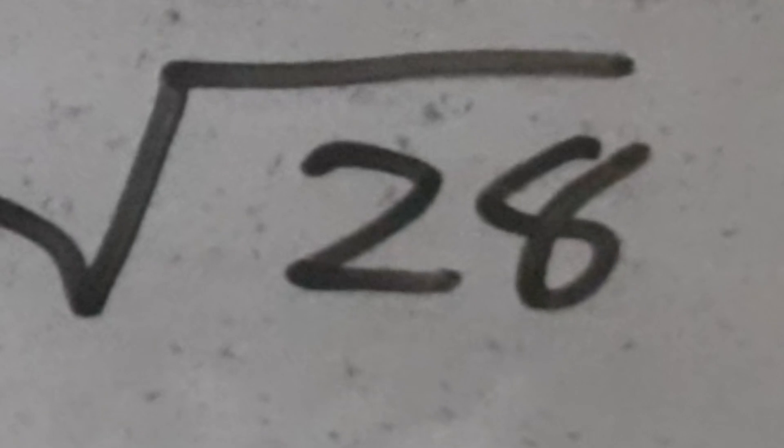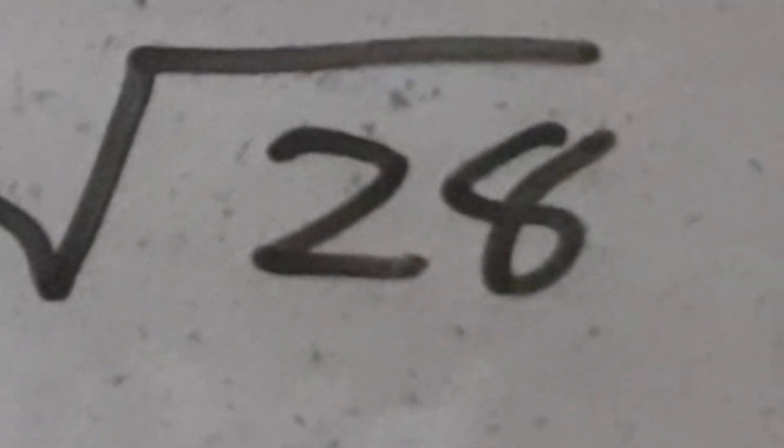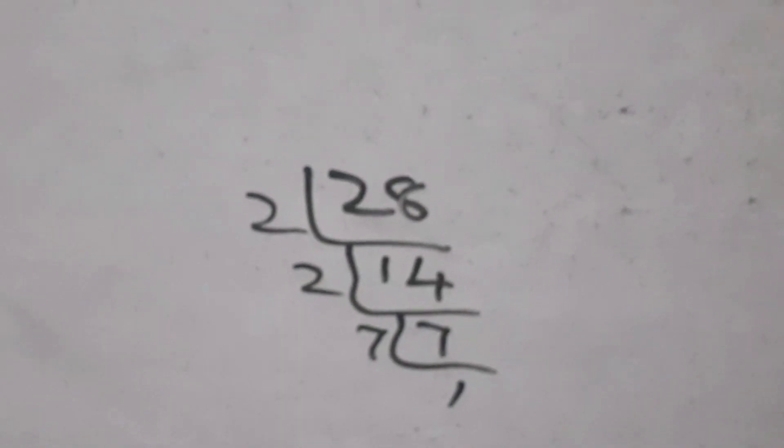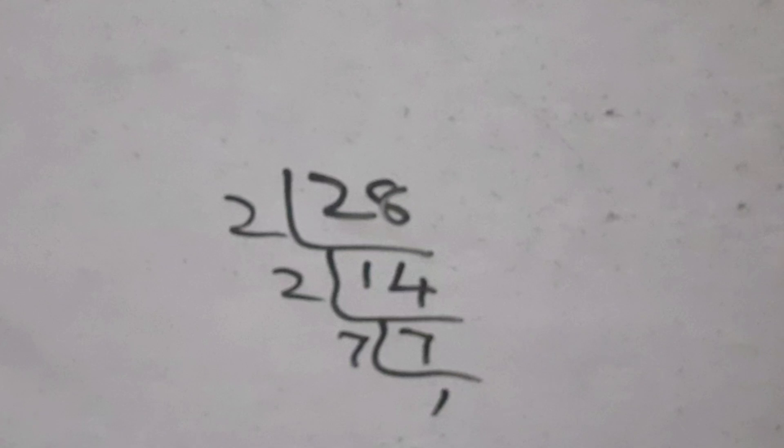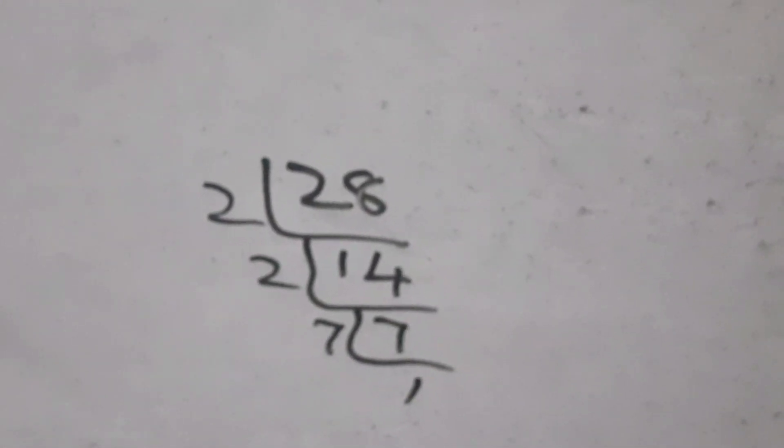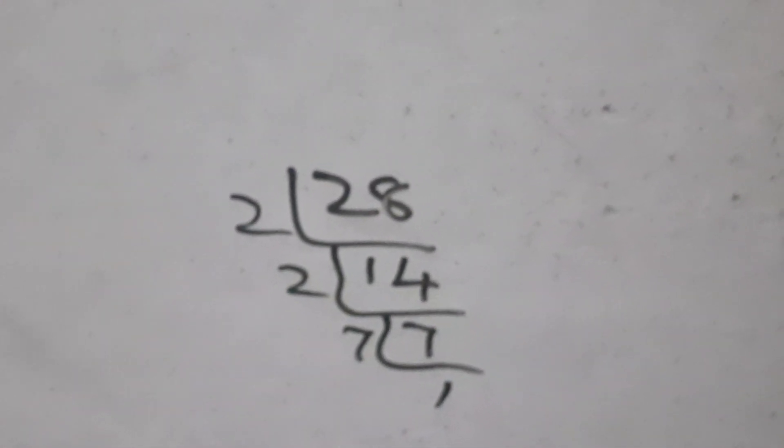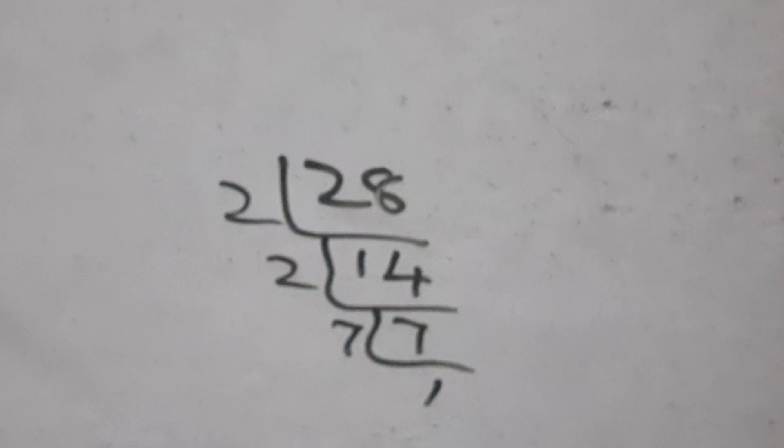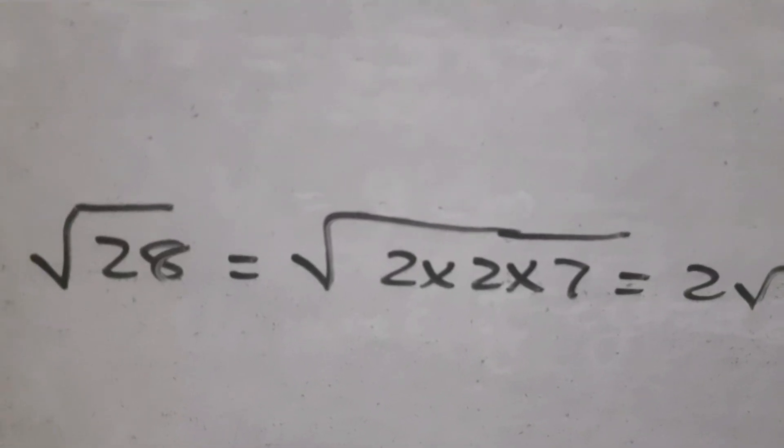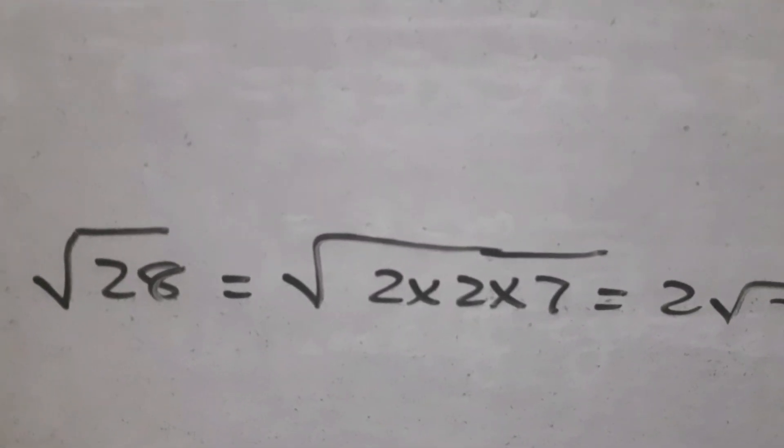The next is root 28. 28 equal to 2 into 2 into 7. So root 28 equal to 2 root 7.